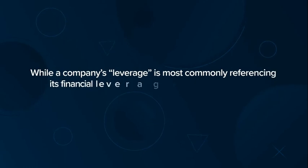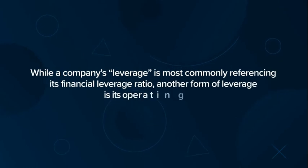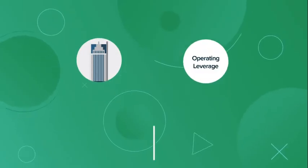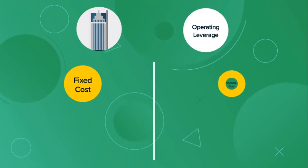While a company's leverage is most commonly referencing its financial leverage ratio, another form of leverage is its operating leverage. A company's operating leverage is the relationship between a company's fixed costs and variable costs.